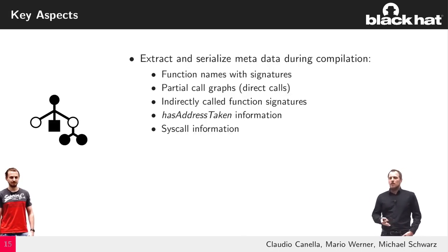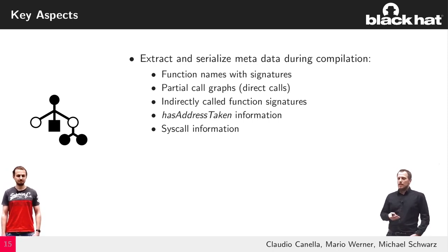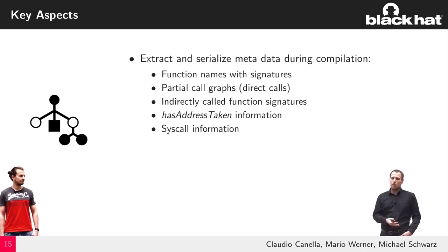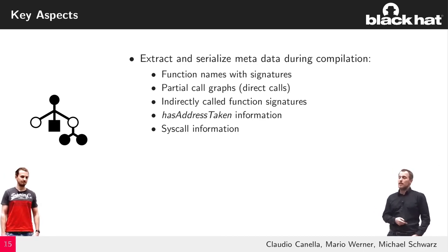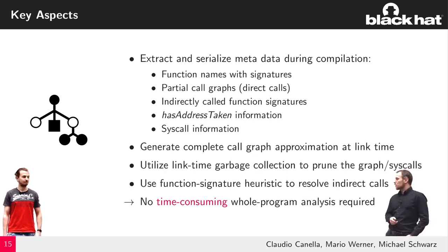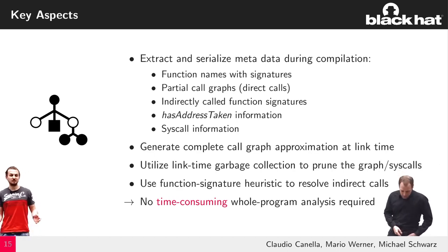To summarize, the key aspects that Sourcealyzer uses are that we use each tool for what it's best at. We use the compiler for extracting information he has access to, like the syscalls and function names and signatures. We emit all this stuff into the object file and then recombine it in the call graph as part of the linker. Additionally, we use link time garbage collection to reduce the number of reachable functions, which helps with this indirect function call handling and the function call signature heuristic to figure out which functions are called indirectly. The result is that no time consuming whole program analysis needed. We can do this all much faster than previous related work.